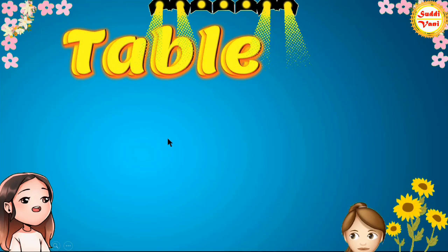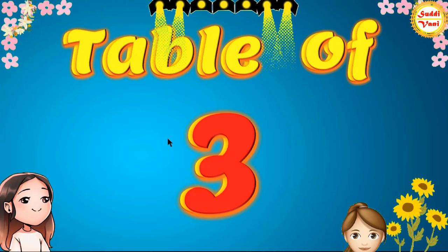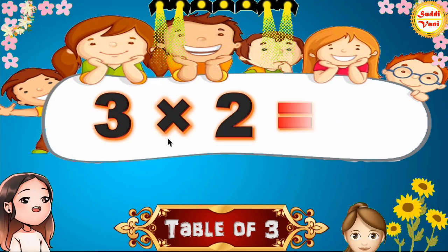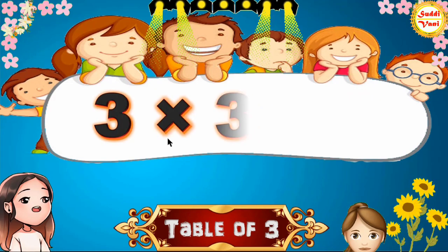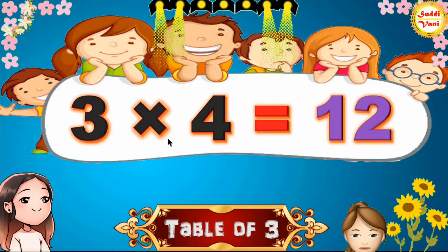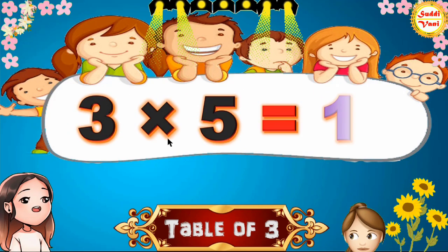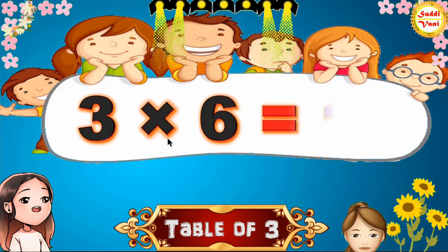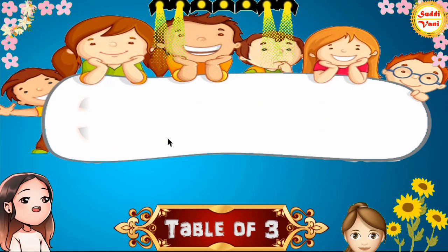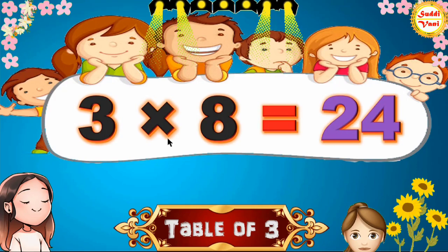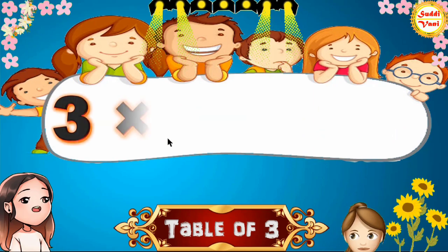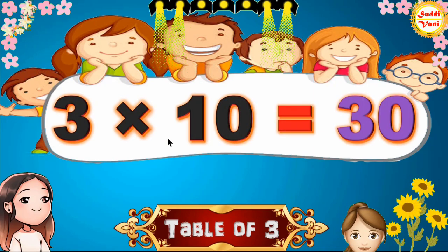Hello children, we will learn table of 3. 3×1=3, 3×2=6, 3×3=9, 3×4=12, 3×5=15, 3×6=18, 3×7=21, 3×8=24, 3×9=27, 3×10=30.